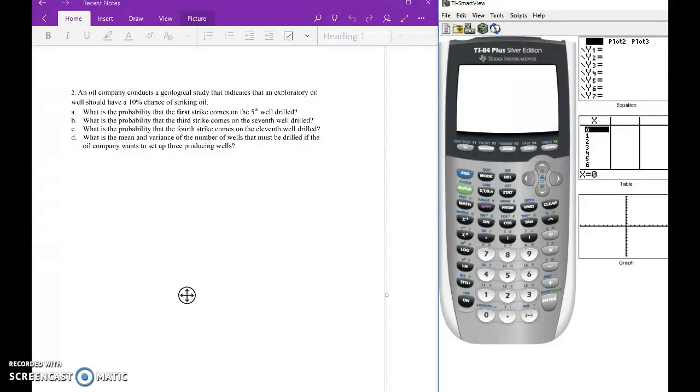Let's just talk about this. This is talking about drilling for oil. An oil company conducts a geological study that indicates that an exploratory oil well should have a 10% chance of striking oil. In the question there's successes and failures when you work with the geometric and negative binomial distributions. This is telling you that the probability of the success is 10%. So let's identify what P and Q are. P would be 10%, which we'll write as a decimal, and then Q, which remember is 1 minus P, which 1 subtract 10% would be 90%, and that will be 0.9.